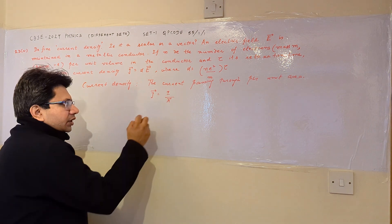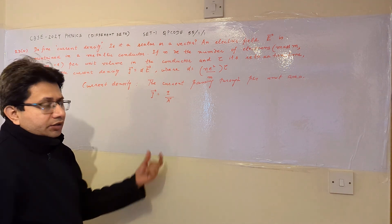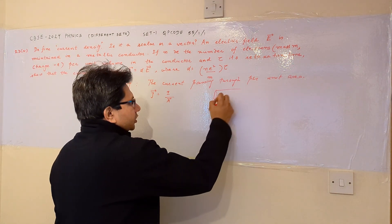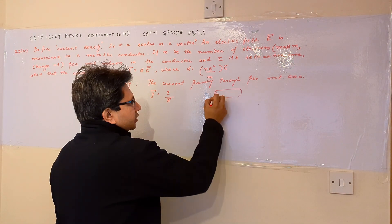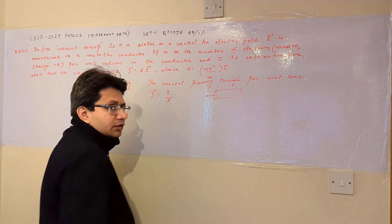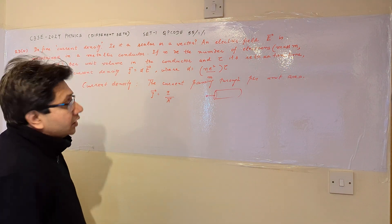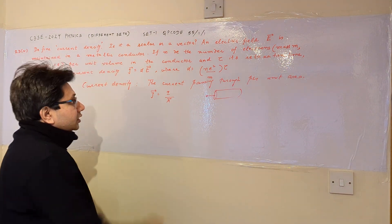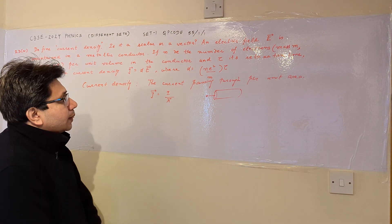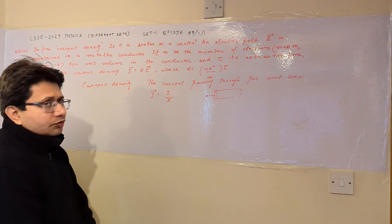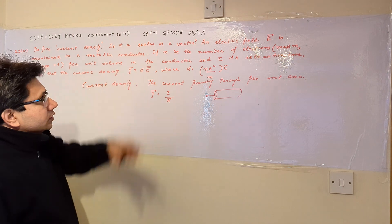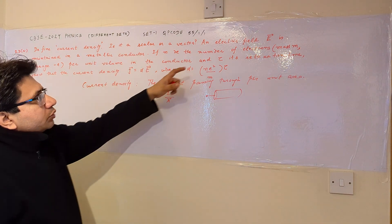Here, A is treated as an area vector. The vector normal to the area is treated as the area vector, which is why j is a vector quantity. So the answer to the first part is: current density is a vector quantity.